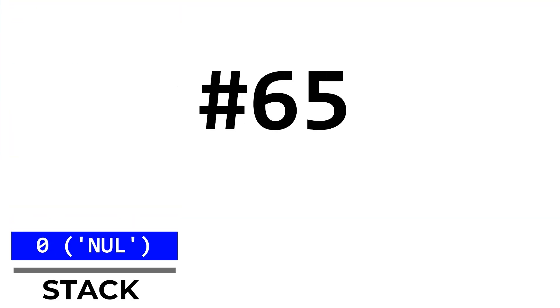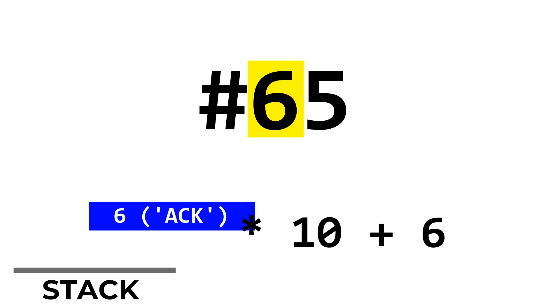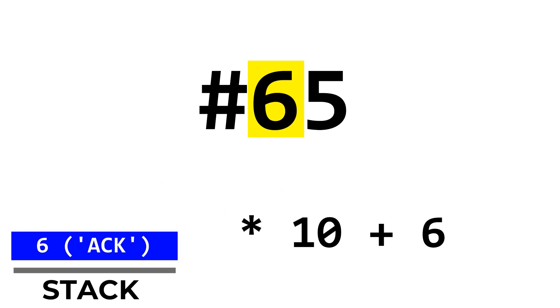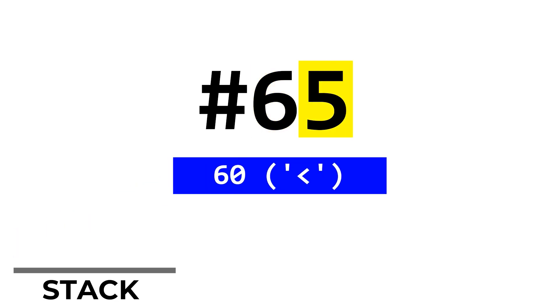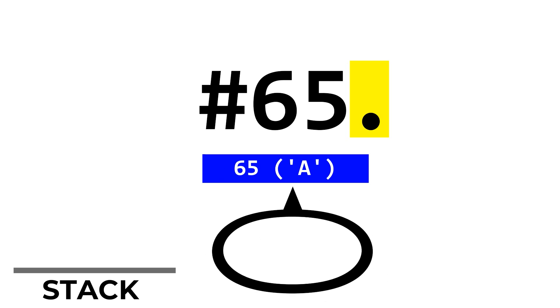The number sign in Emmental pushes a zero onto the stack. The number sign can then be followed by digits, which will pop the top value on the stack, multiply that number by 10, add whatever digit you type, and then push that whole result back onto the stack. This can be done many times to create numbers, such as 65 here. To output something from the stack, you type a period, which will pop and output the top value of the stack as an ASCII character. So this program outputs the letter A.